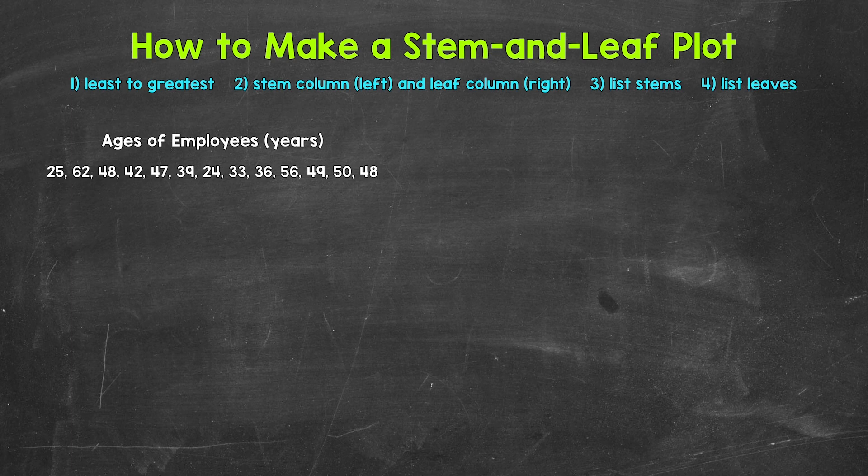Let's jump into our first example, where we have the ages of employees at a business. The first thing that we need to do is order the data from least to greatest if it's not already done so. This data is not in order, so we will start there. Ordering the data will make everything much simpler once we get to creating the stem and leaf plot.